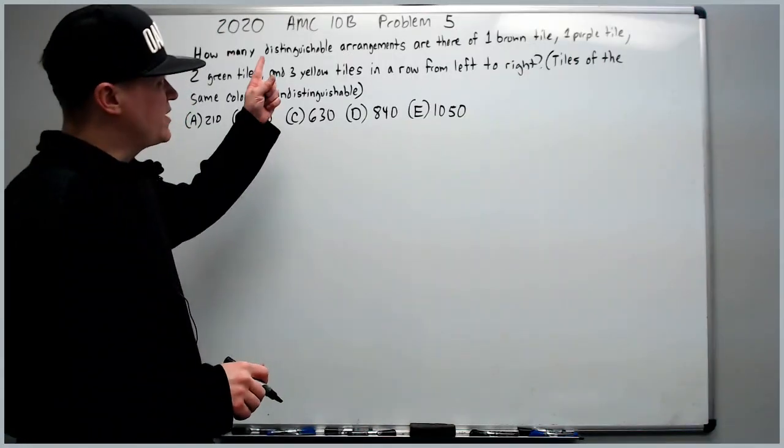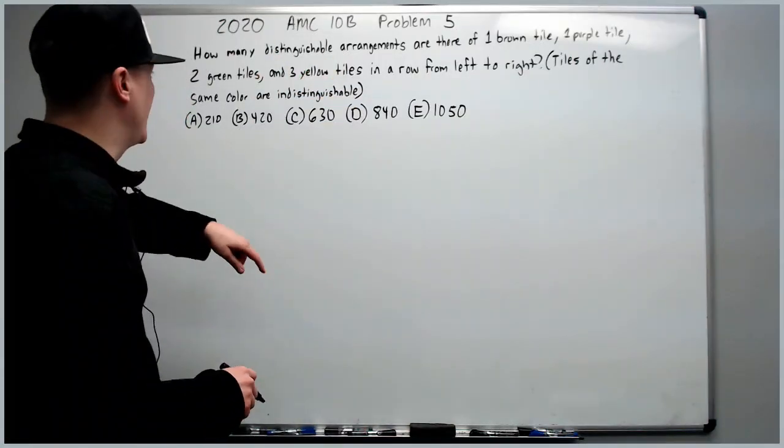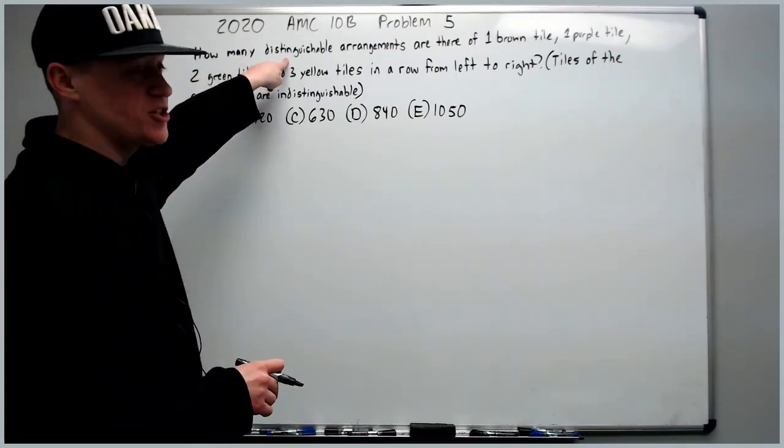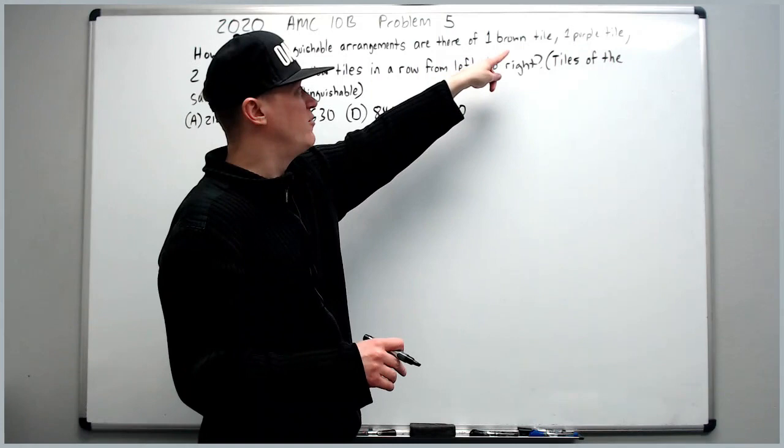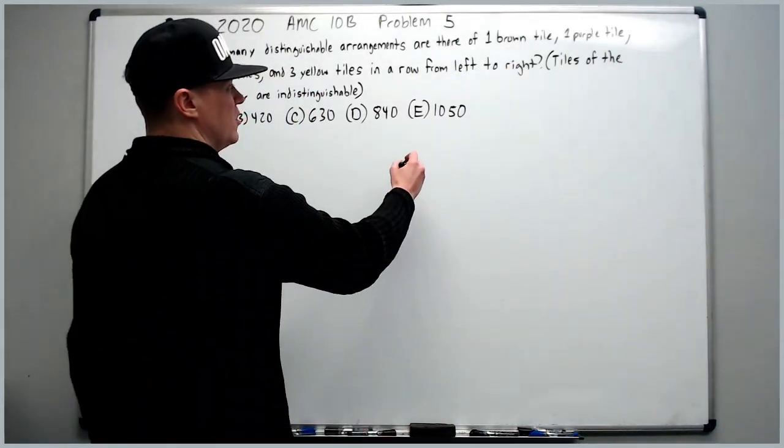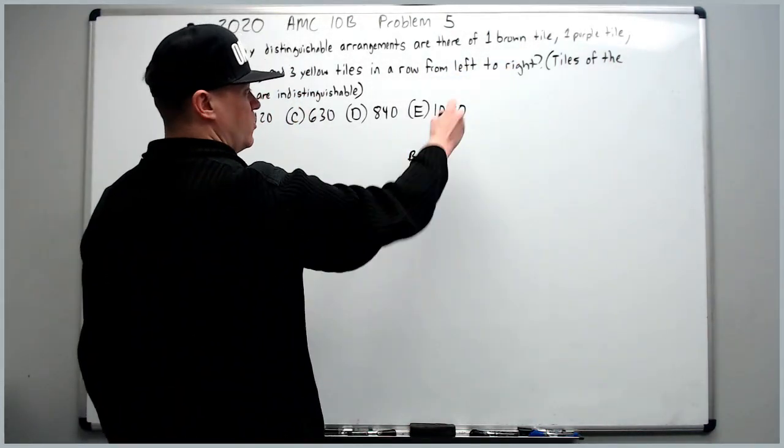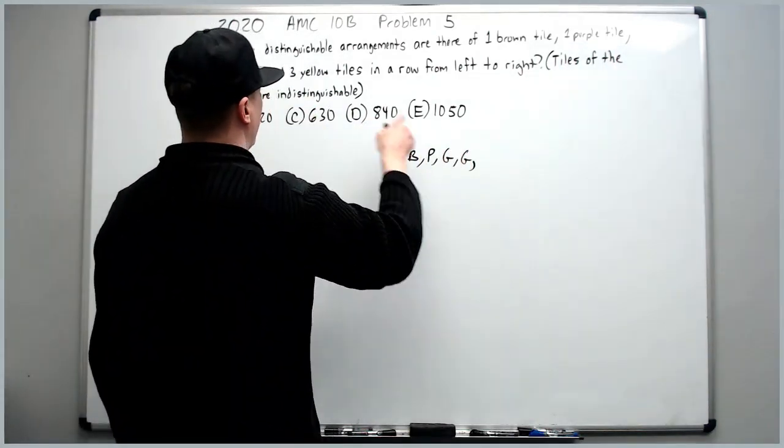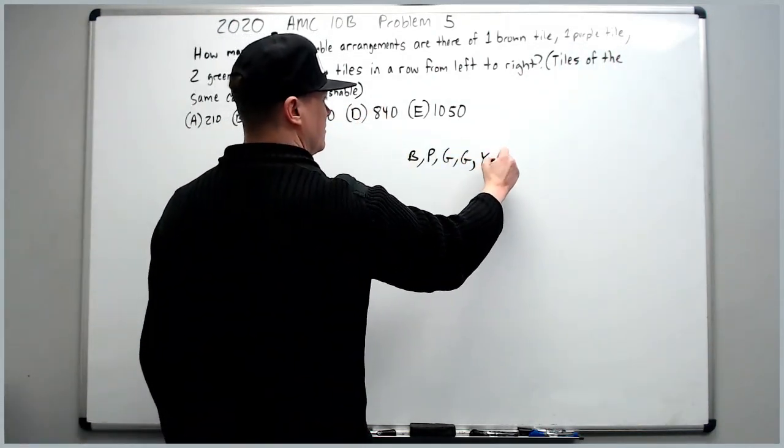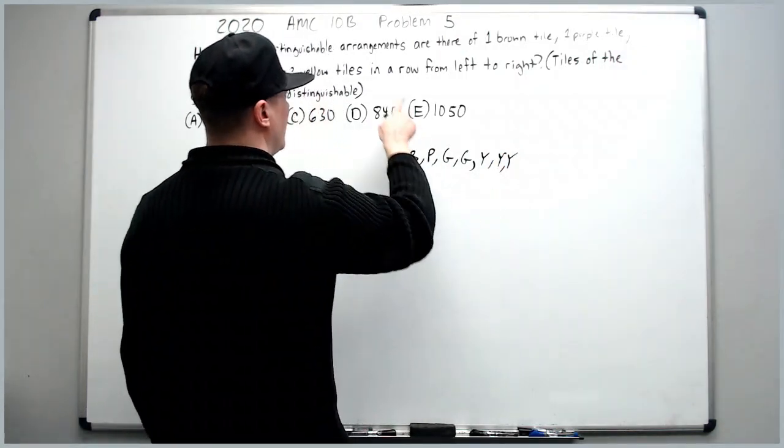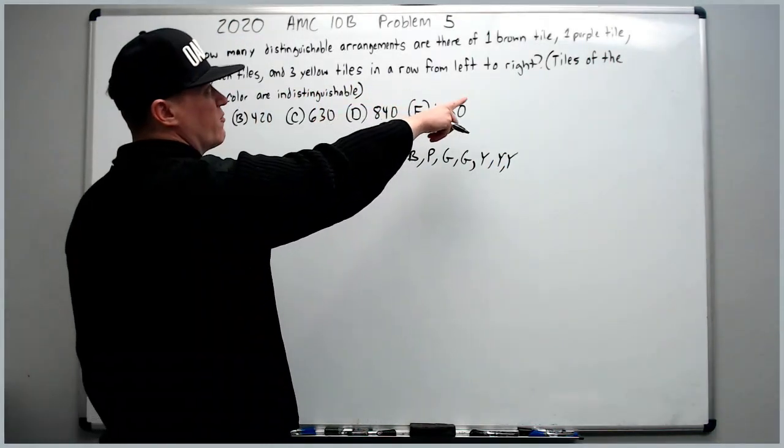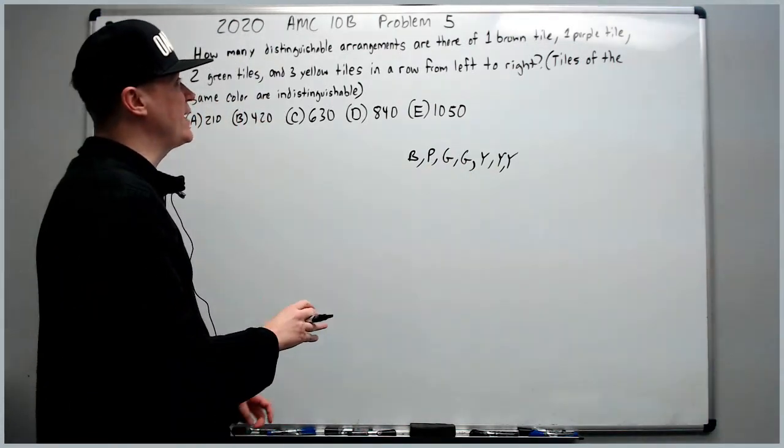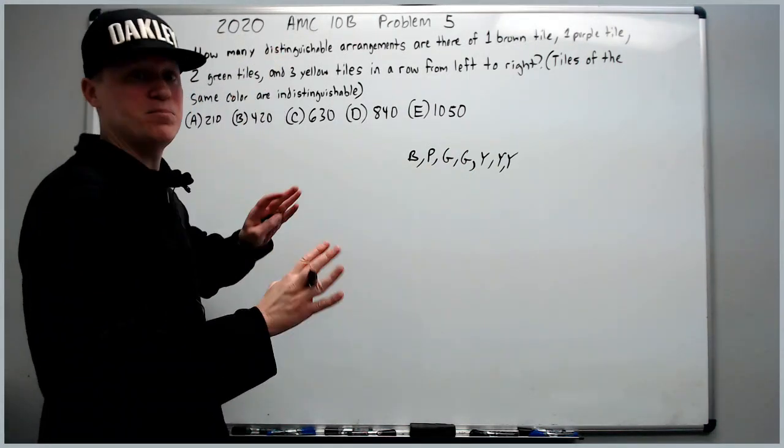Okay, and onto the 2020 10B problem 5. The last problem of this set. How many distinguishable arrangements are there of one brown tile? Start keeping track. One brown, one purple, two green, and three yellow tiles in a row from left to right. So basically how many arrangements of these can we make that are distinguishable? That means can be told apart.